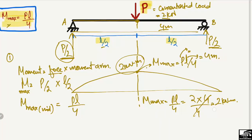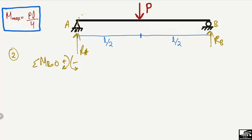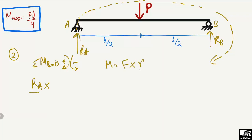Now for the second method, which is a bit more complex. Let support A have reaction RA and support B have reaction RB. Taking the summation of moments about point B equal to zero, with clockwise moments positive and counter-clockwise negative: RA acts clockwise about B, so RA multiplied by L is positive. The load P acts counter-clockwise about B, so minus P multiplied by L/2.